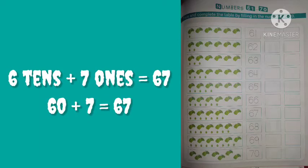In the next box, 6 tens and 1, 2, 3, 4, 5, 6, 7 — 7 ones. 6 tens means 60 and 7 ones means 7. 60 plus 7 is 67.